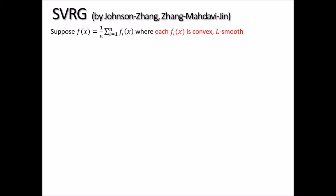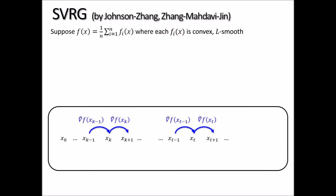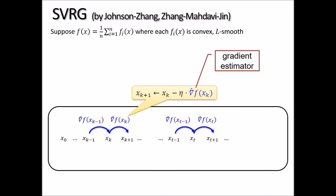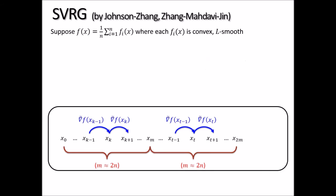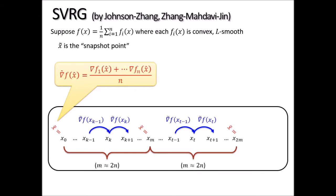Here is how SVRG works. It iteratively performs updates going from x_k to x_{k+1} in the direction of the gradient estimator with learning rate eta. SVRG divides the algorithm into epochs, each of length m, which is roughly 2n both in theory and in practice. At the very beginning of each epoch, it defines a snapshot point and computes the full gradient exactly at that point.